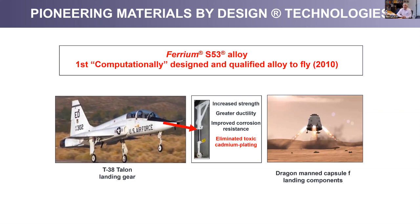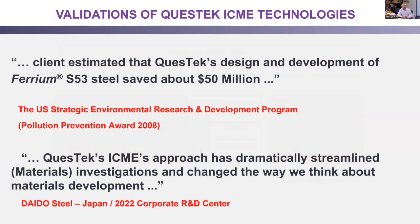The S53 was designed to address stress corrosion cracking of landing gears, and also to eliminate toxic cadmium plating on ultra-high-strength steels that caused hydrogen uptake via corrosion. It will also be on the Dragon capsule landing on Mars and is currently on several SpaceX landing components. The U.S. Strategic Environmental Research and Development Program noted it helped reduce dependency on cadmium plating and provided estimated savings of close to $50 million.